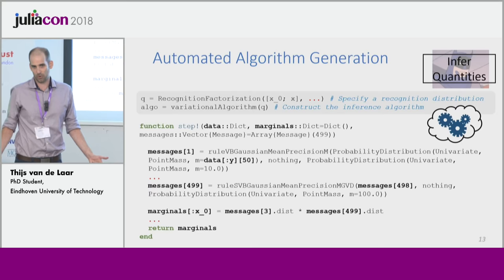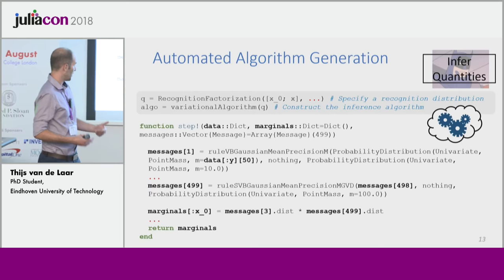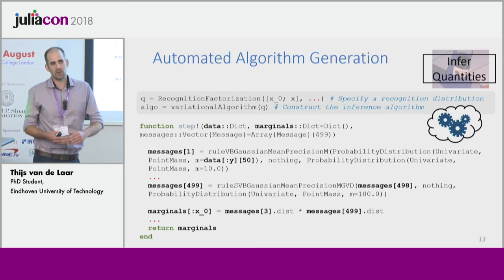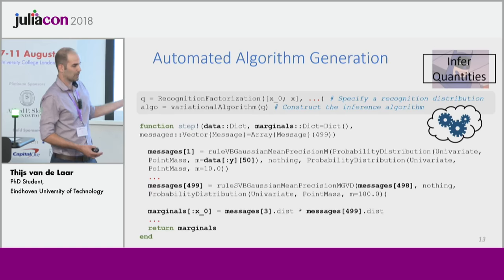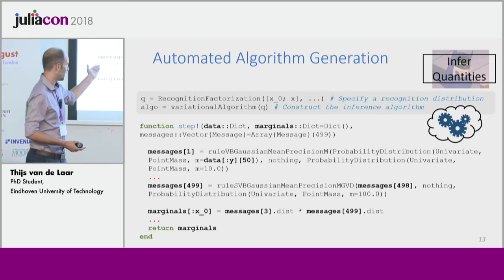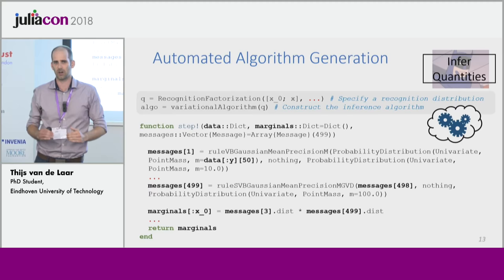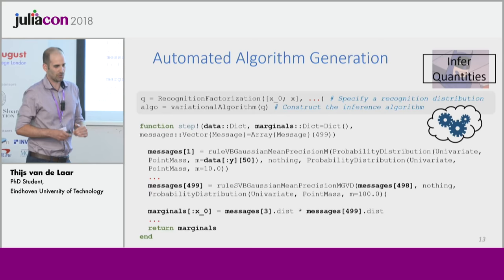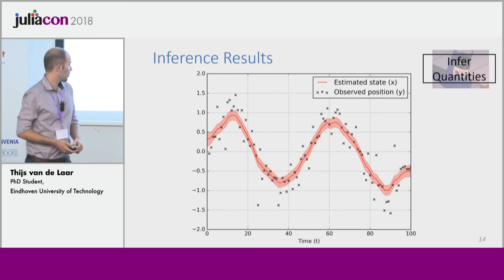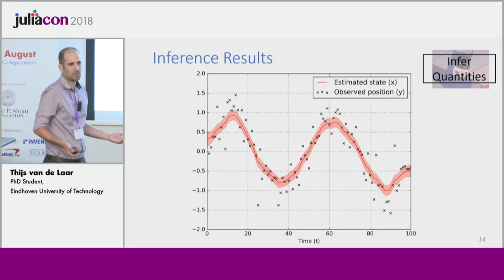This inference function accepts a dictionary of data and builds an array of messages. The first message depends on the data, and messages depend on each other — for example, the 499th message depends on the previous one. What it returns is a dictionary of marginals holding the quantities we're interested in. If we plot that hidden state, we get a red line which seems to be a fair estimate of the actual position underlying the noisy data.